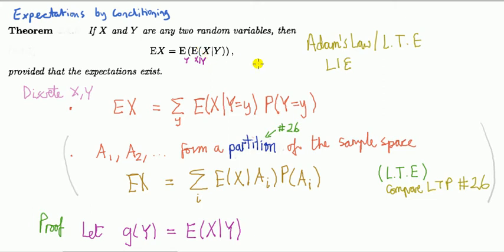This result is known as the law of iterated expectations, otherwise the law of total expectations and other names.